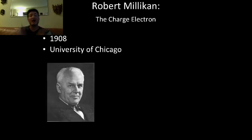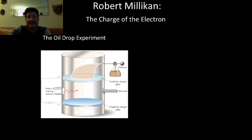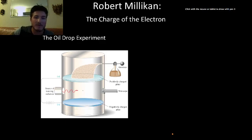Moving on, we can talk about Robert Millikan. Robert Millikan found the charge of an electron. He was working in 1908 at the University of Chicago, and he designed his own experimental setup here. This is called Millikan's Oil Drop Experiment.